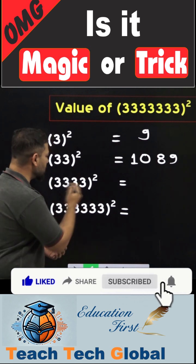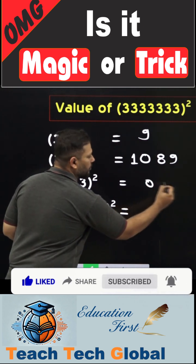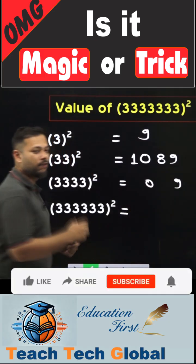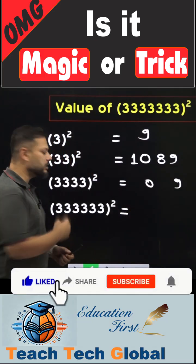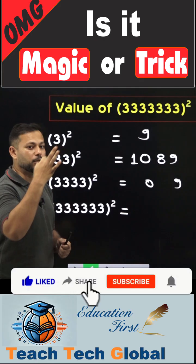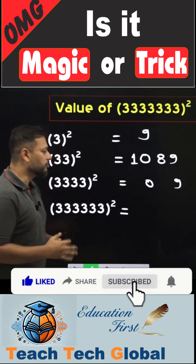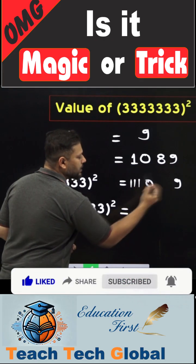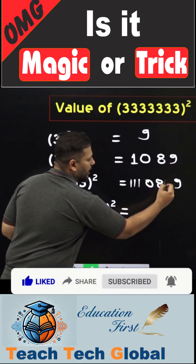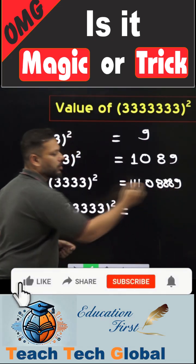Similarly, for this number, again, the square of 3 is 9. So we will write it as 09 and we will count the number of 3's. How many 3's are there? There are 4 3's. Just reduce 1. We are left with 3. So we will write a number greater than 0 3 times and a number less than 9 3 times. This is the square of this number.